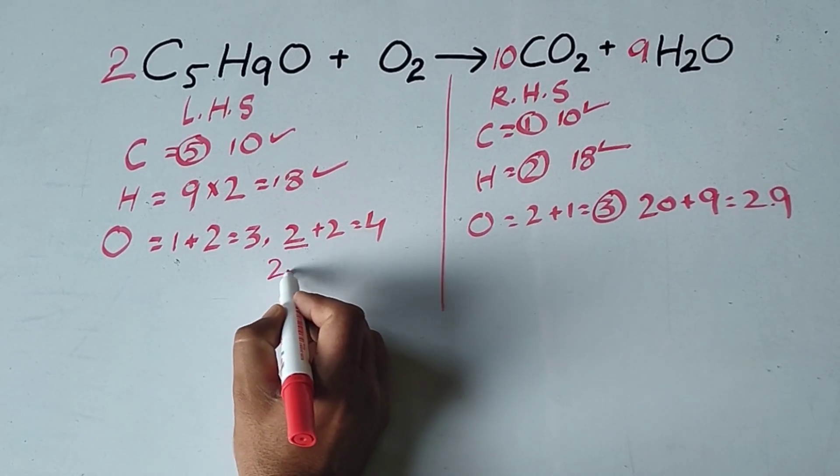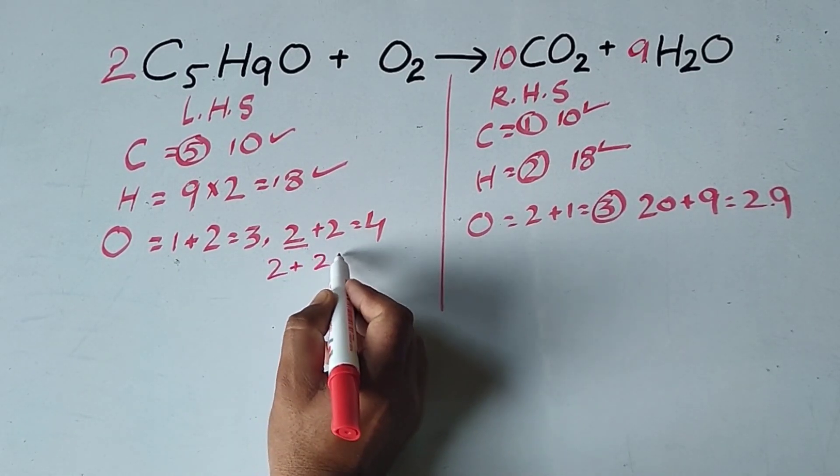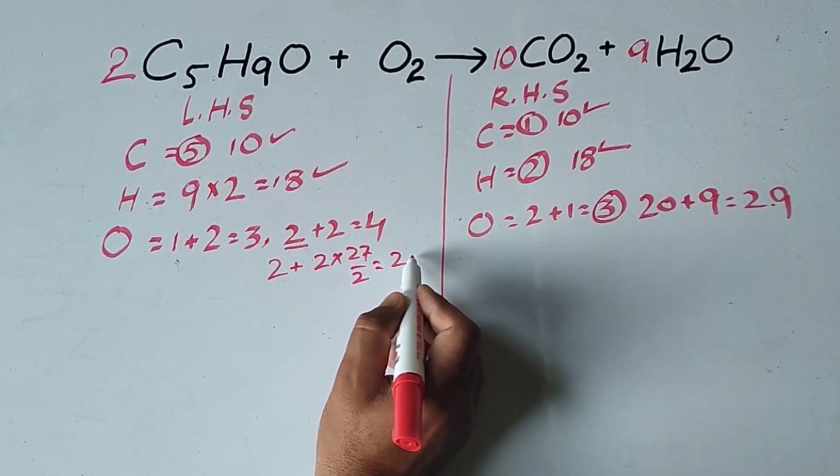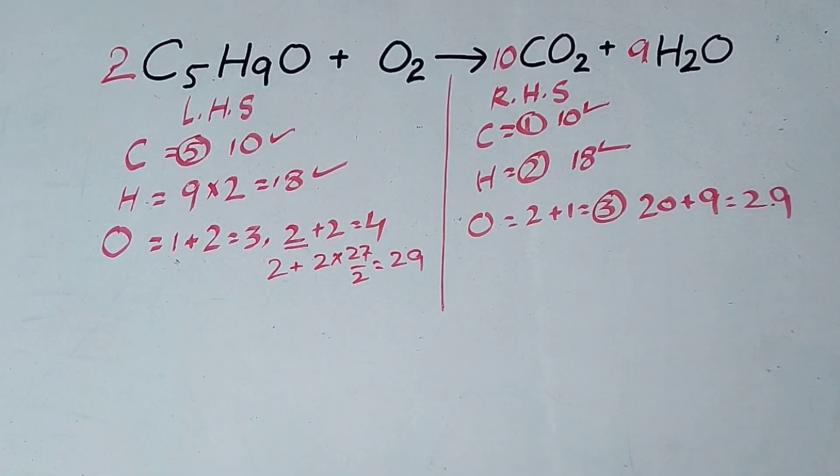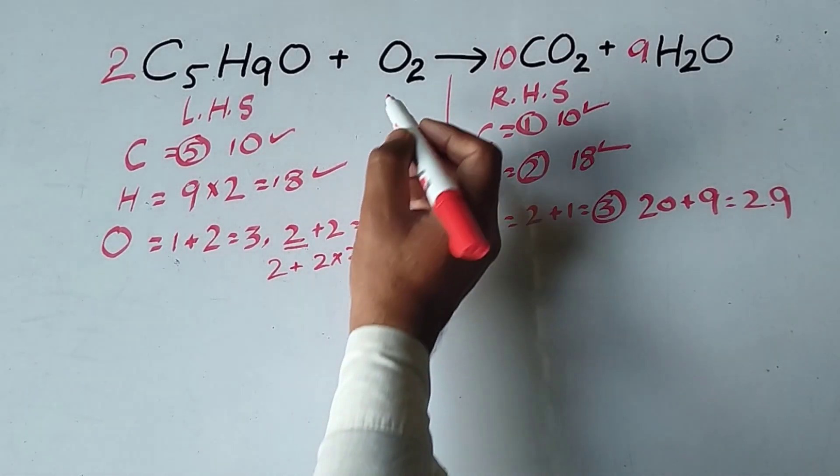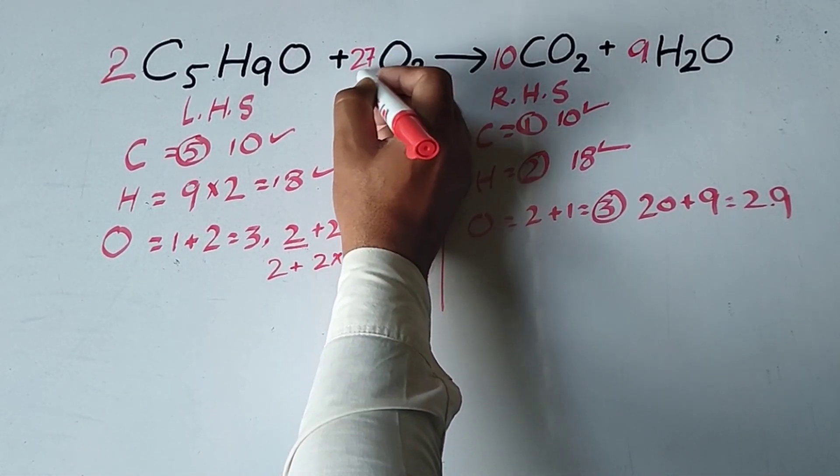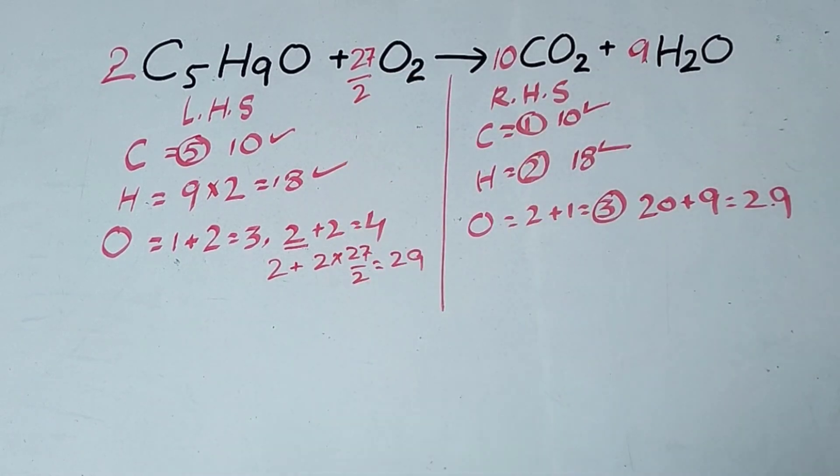So this is 2 plus 2 multiplied by 27 divided by 2, so these are 29. Now we add to this equation 27 divided by 2. This equation has a fraction.